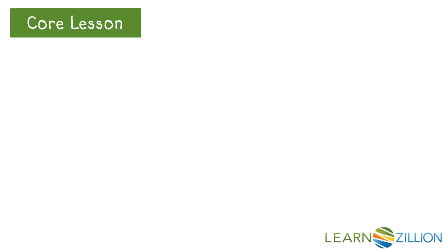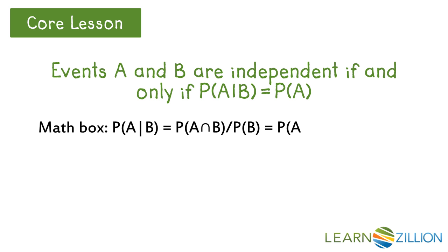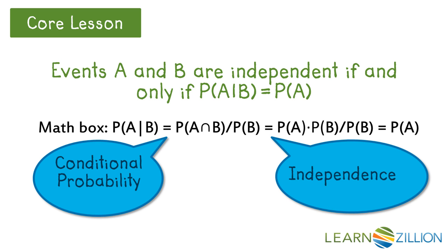This leads to an important result: events A and B are independent if and only if the conditional probability of A given B is the same as the probability of A. The first equality holds by the definition of conditional probability, and the second is true because the two events are independent. This is why this particular rule is valid.